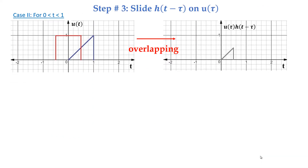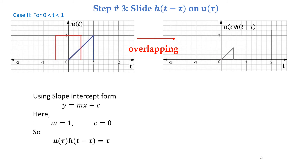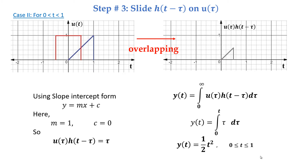Case two: for time t from zero to one, you can see the overlapped area. We can write the equation for this overlapped area using slope-intercept form, where the slope is one and the intercept is zero. So the equation for the overlapped area is equal to tau. Using the convolution integral and integrating, applying the limits, we have y(t) = ½t² for time from 0 to 1.